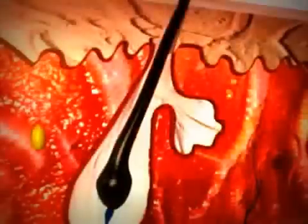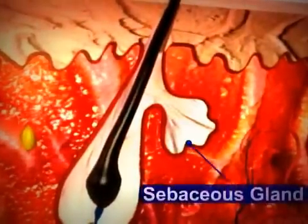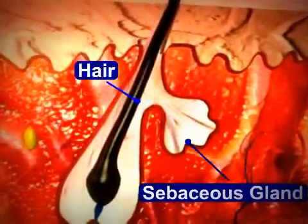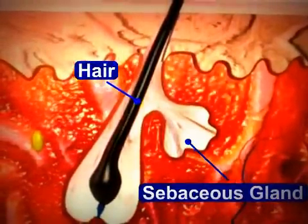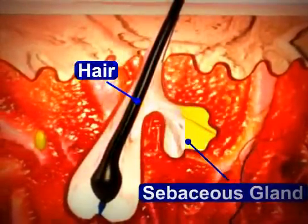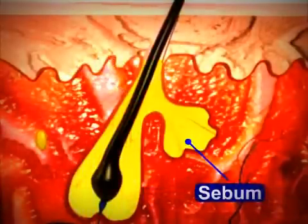The pilosebaceous unit, or PSU, of the skin consists of the sebaceous gland and the hair follicle. The sebaceous gland secretes an oily substance called sebum, which protects the hair and skin.